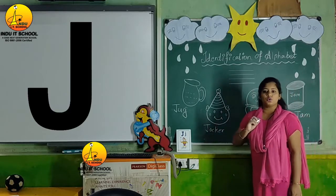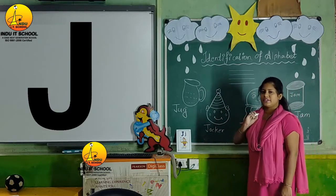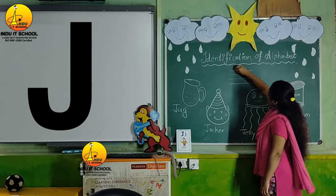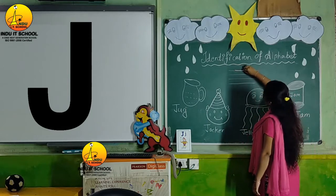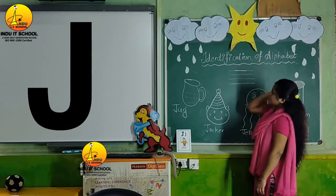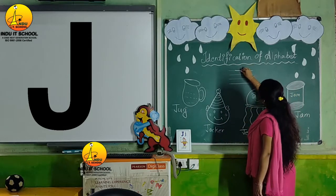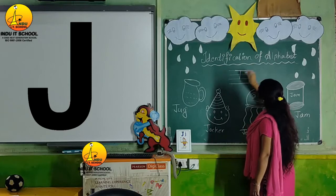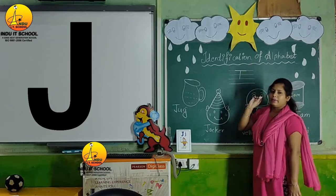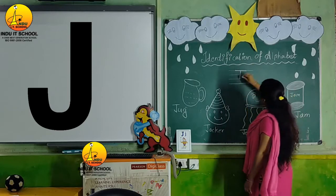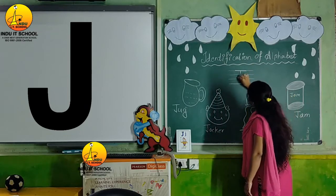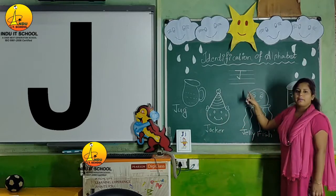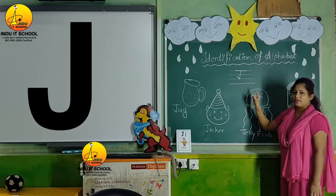Look here, how to write alphabet J. Make one sleeping line, and make one standing line, and make one sliding line. It is alphabet J.